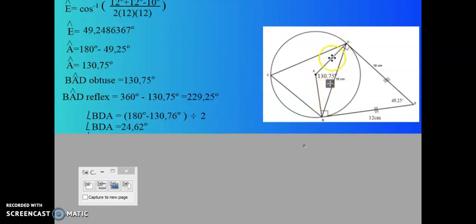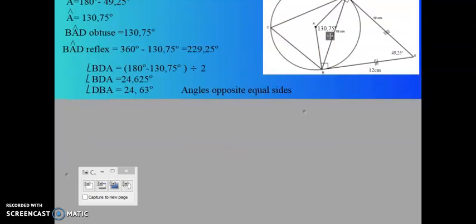So the angles of a triangle is 180 degrees. So 180 degrees minus 130.75 gives me a total for these two angles together. So I divide that answer by 2 because they are equal angles. So it gives me 24.625 which round it off will give me 24.63 degrees.